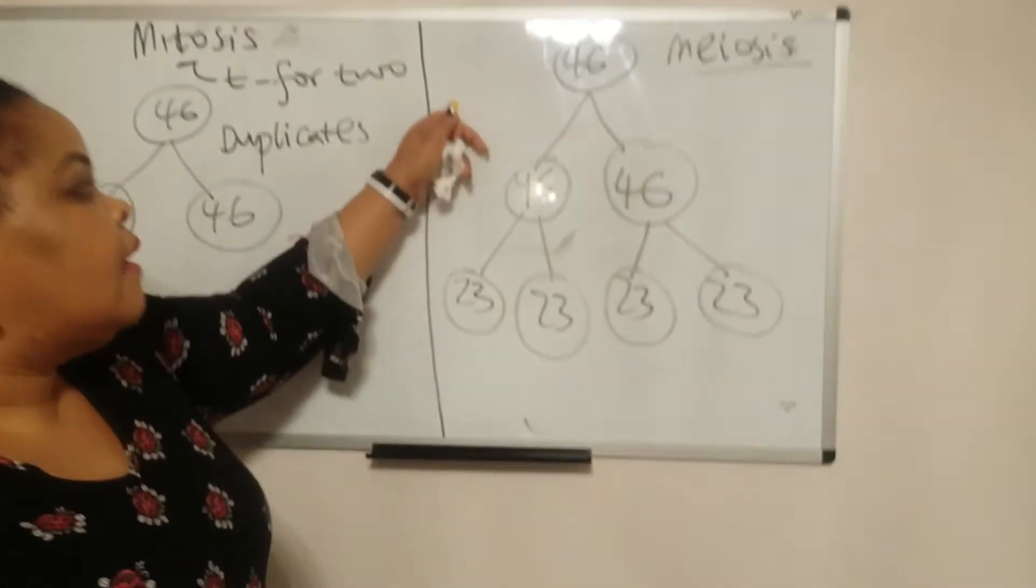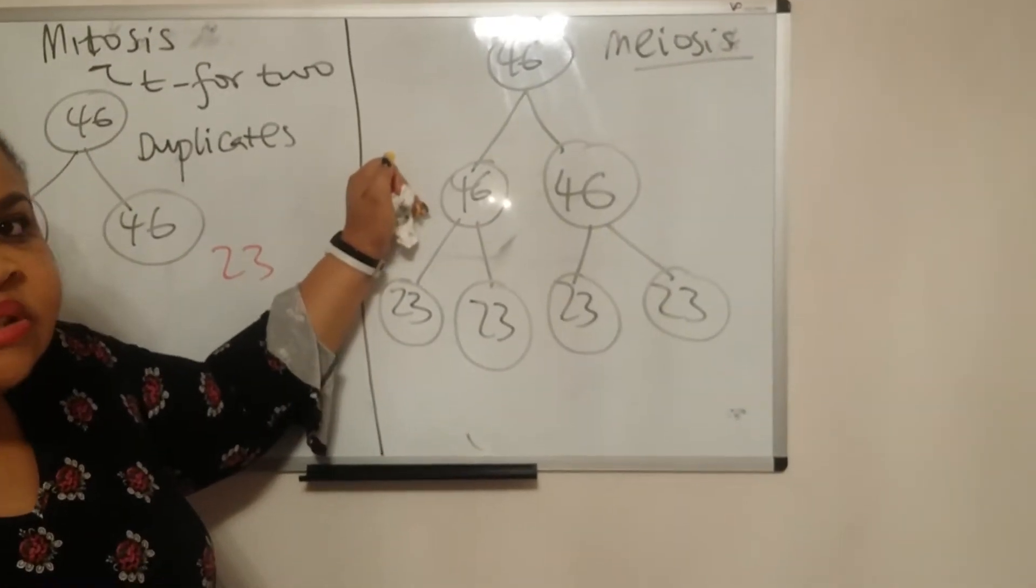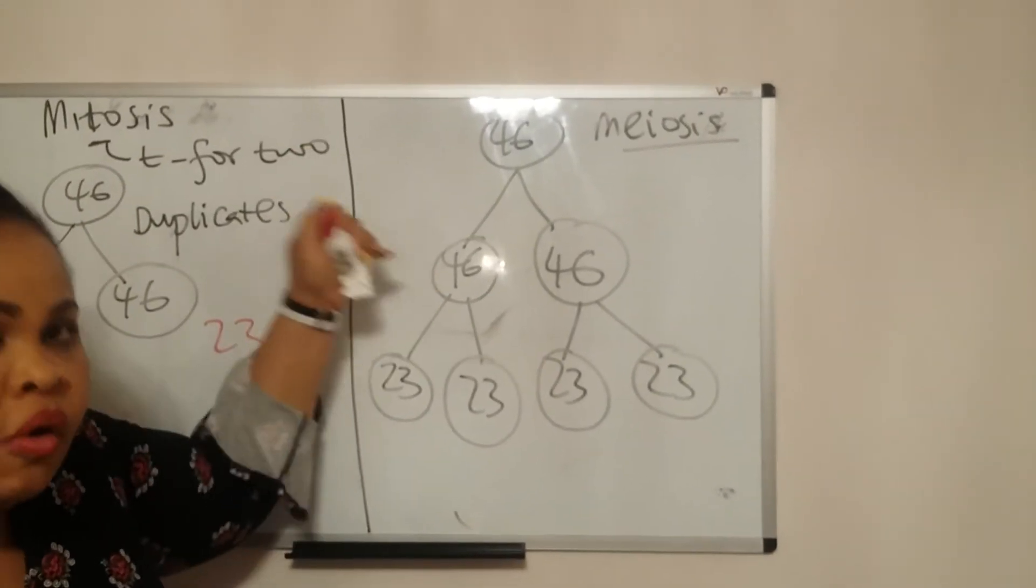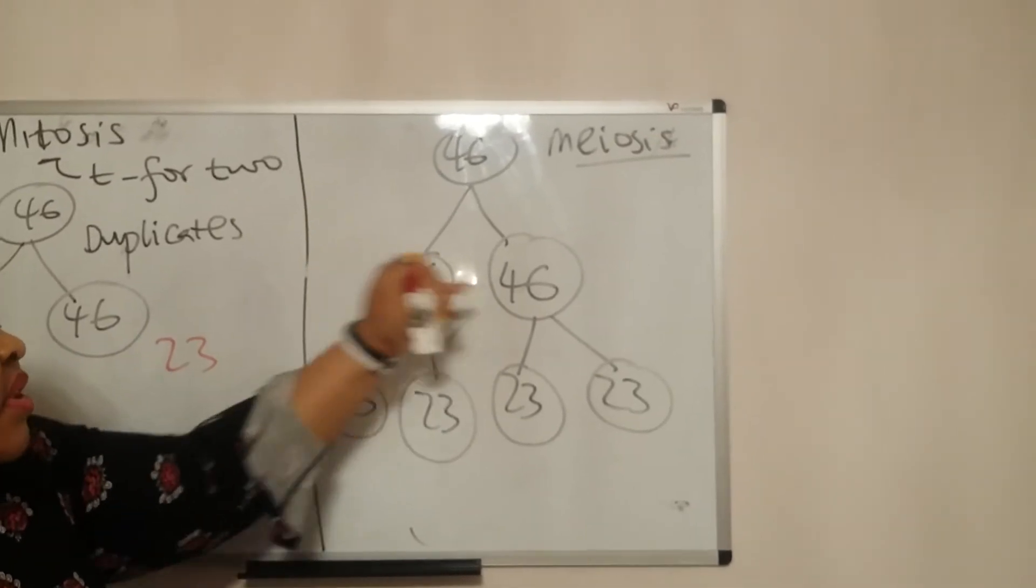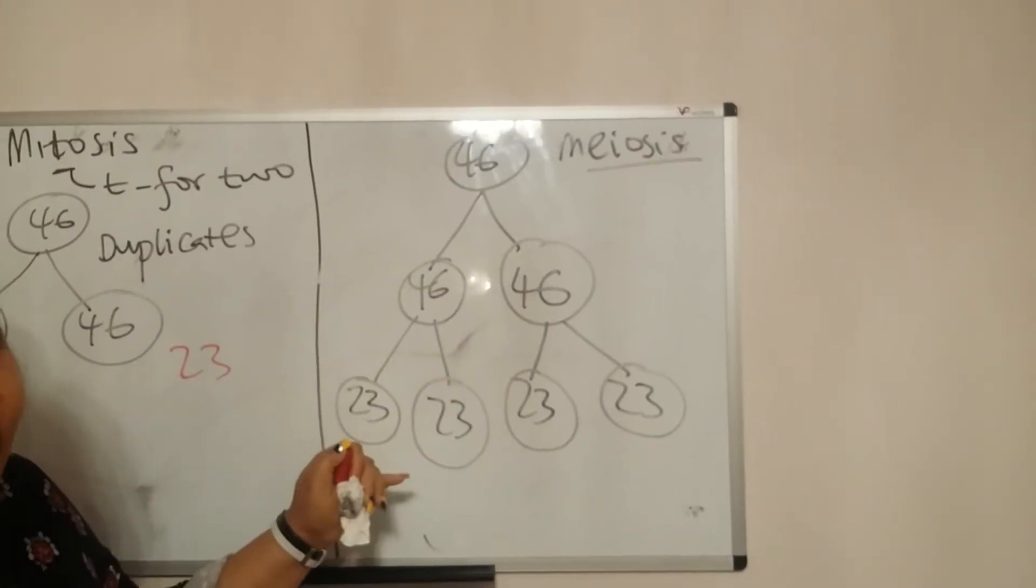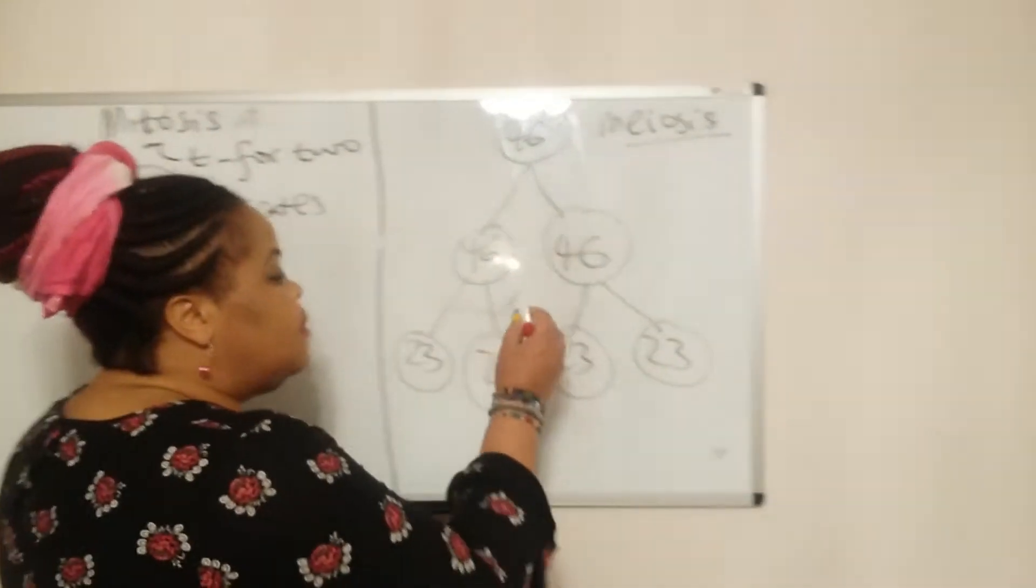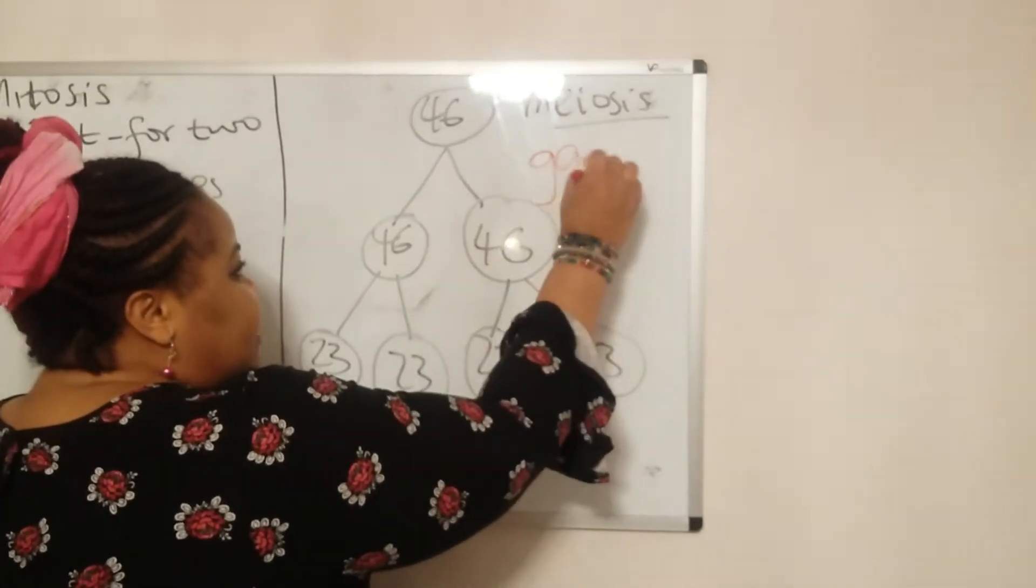For meiosis, it's like you have double the stage—the stages happen all over again. So you end up with 46 46, and those split in half to end up with 23. This is the process that leads to gametes.